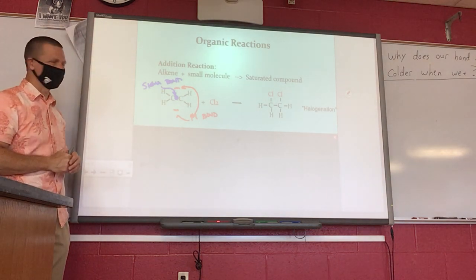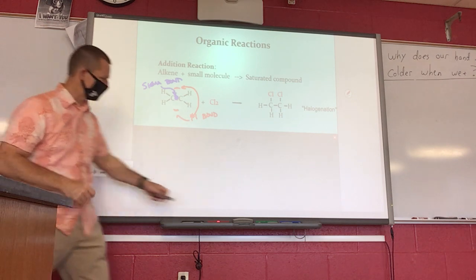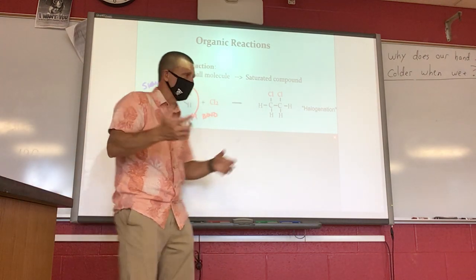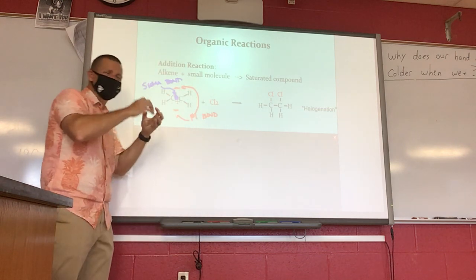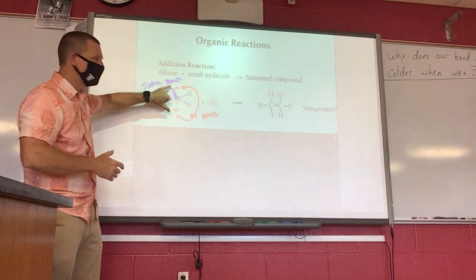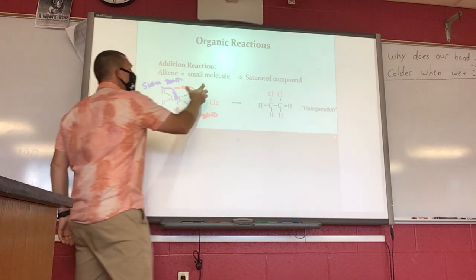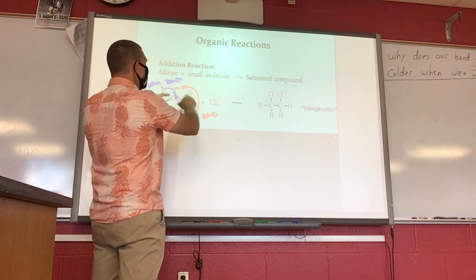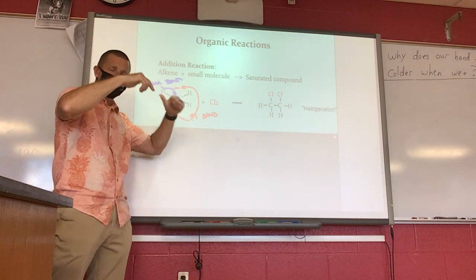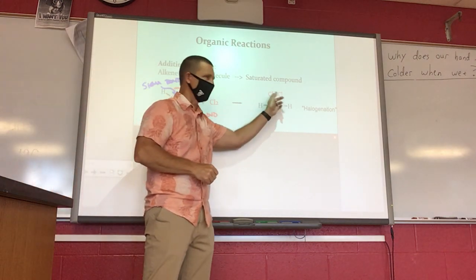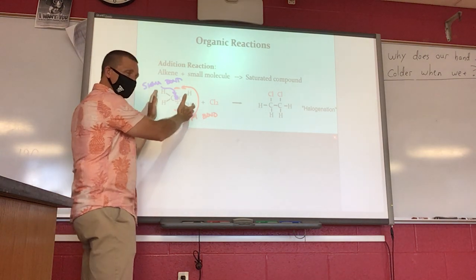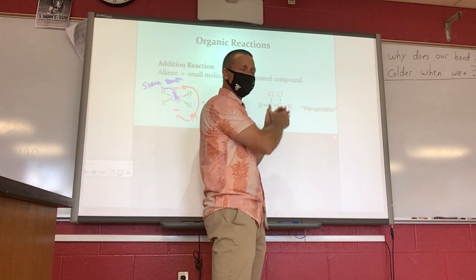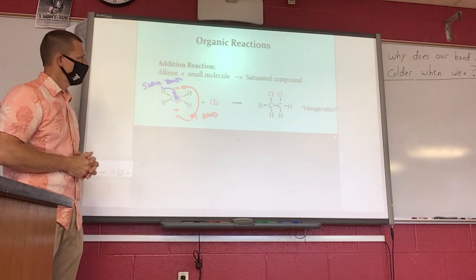When the two chlorines come apart and become very reactive, the most vulnerable part of the alkene molecule is the pi bond. The chlorines attach to the pi bond. When that bond between the two carbons is broken, each carbon has an unpaired electron, and both chlorines then attach to those unpaired electrons. We call it an addition reaction because the molecule started with six atoms and ended with eight — two carbons, four hydrogens, plus two Cl atoms.